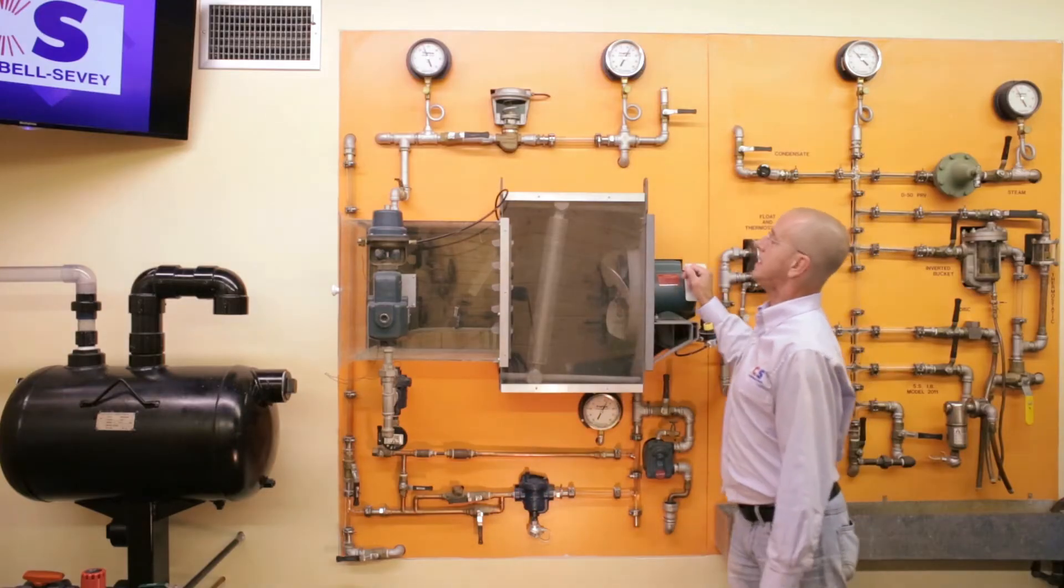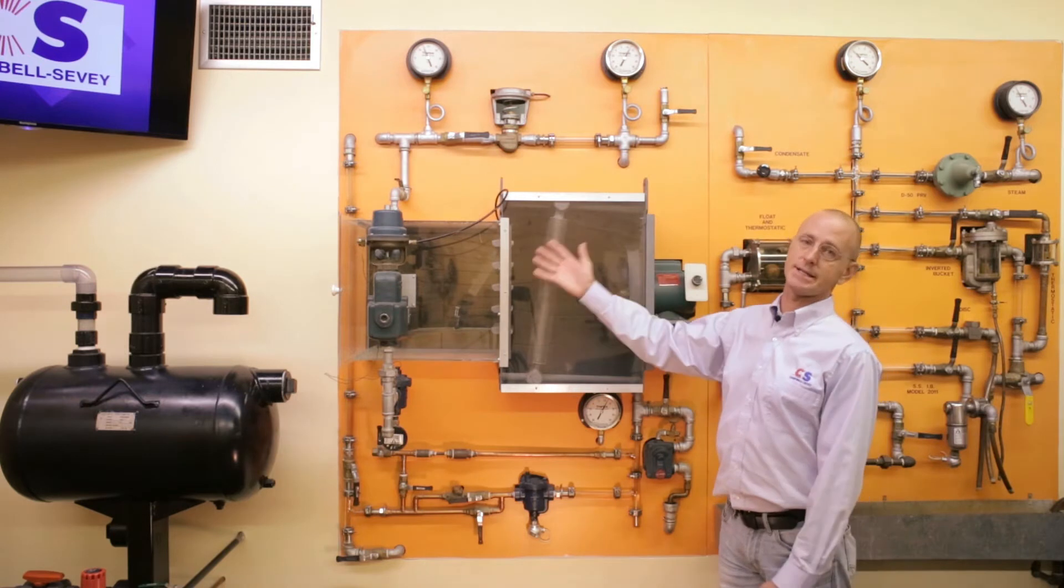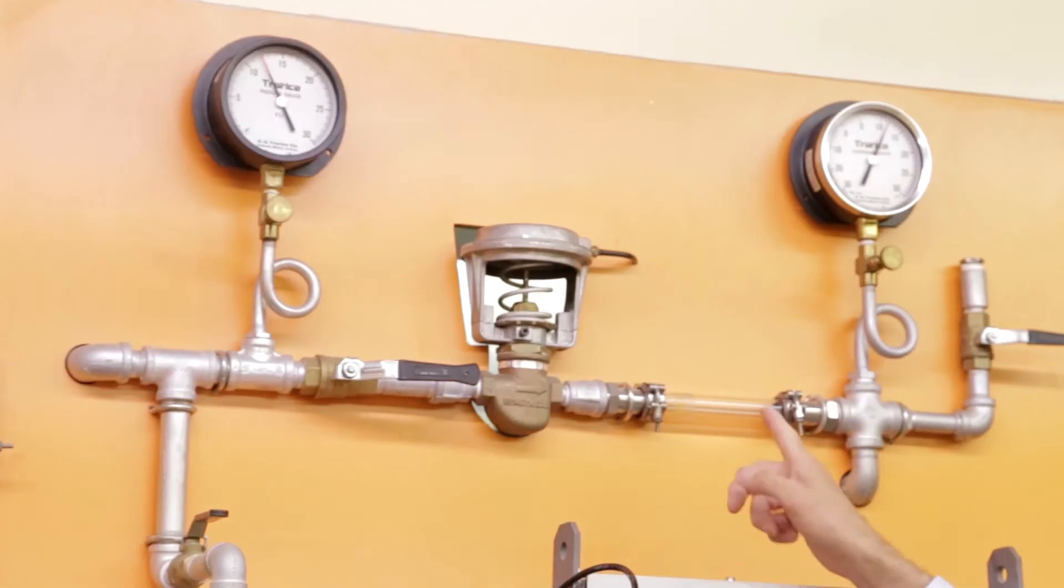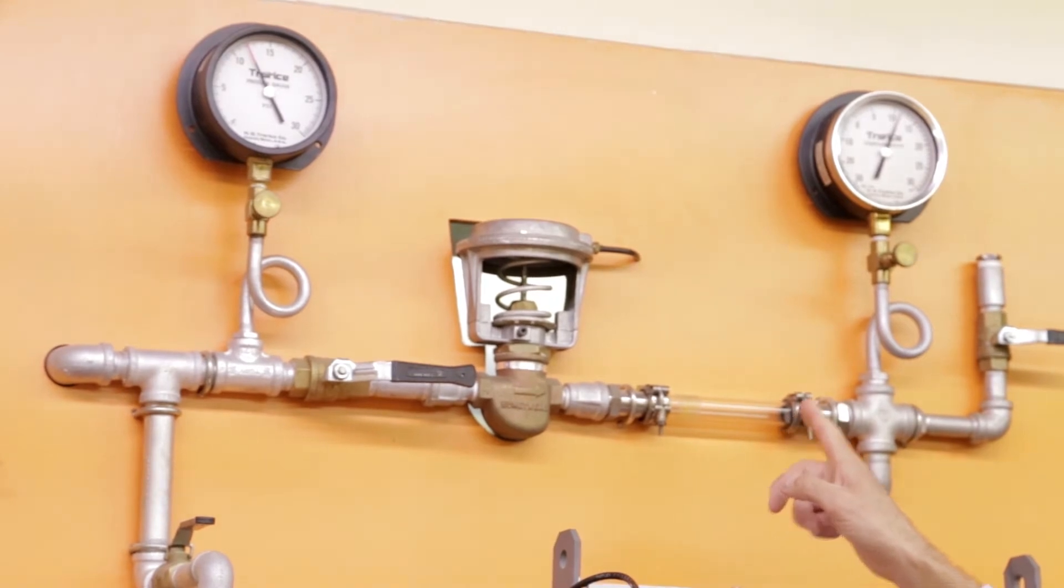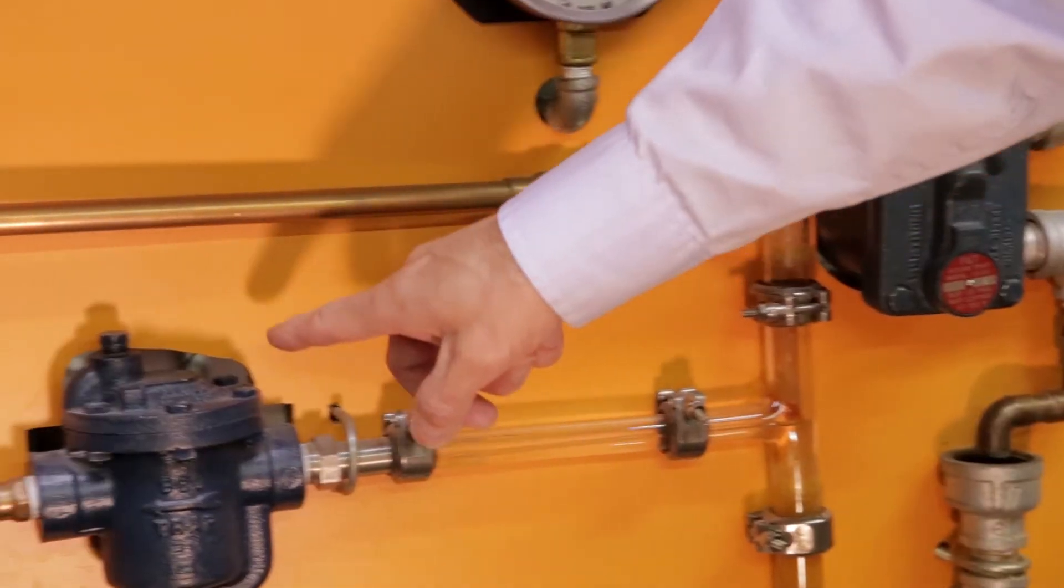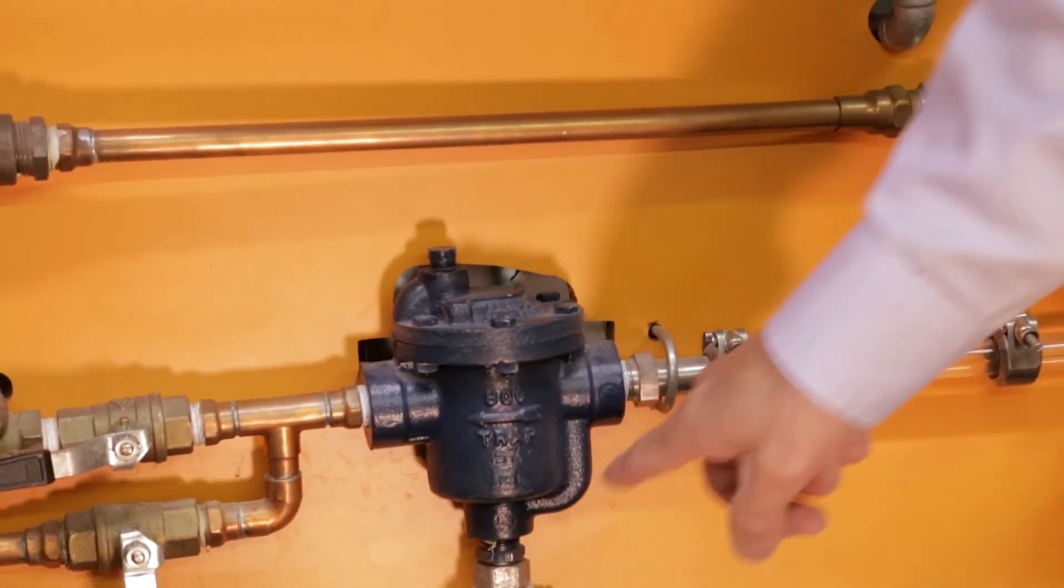So if we turn the fan on, this is how the coil would operate on design day. We've got our control valve wide open. We've got a little bit of differential pressure across the control valve, but mostly we've got plenty of differential pressure down here to push condensate through our primary trap, and everything works just fine.